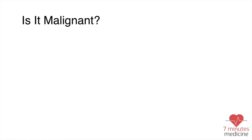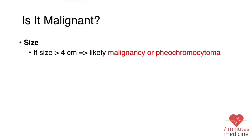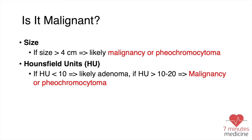Starting with the first question — is it malignant — that depends on three main factors. First, the size: if the size is more than four centimeters, this is most likely malignancy or pheochromocytoma. Second, the Hounsfield units, which is a way to measure the density of the tissue. For example, solid tissue like the kidney measures 20 to 150 Hounsfield units compared to fat, which is negative Hounsfield units. So the lower the better — less likely to be malignancy. If the Hounsfield units are less than 10, this goes more with adenoma.